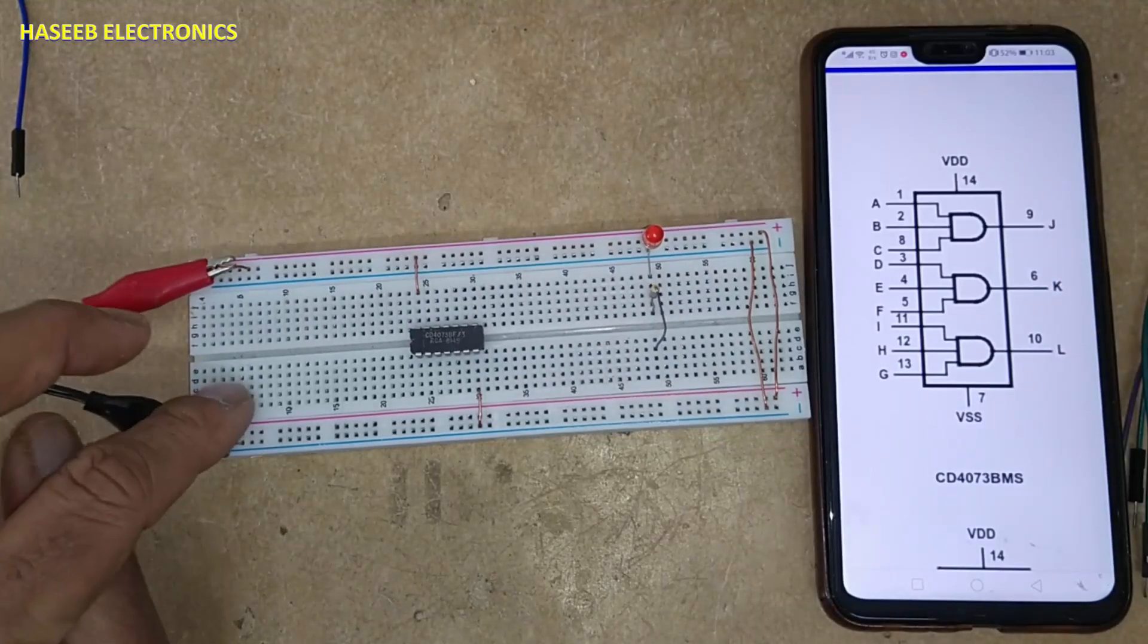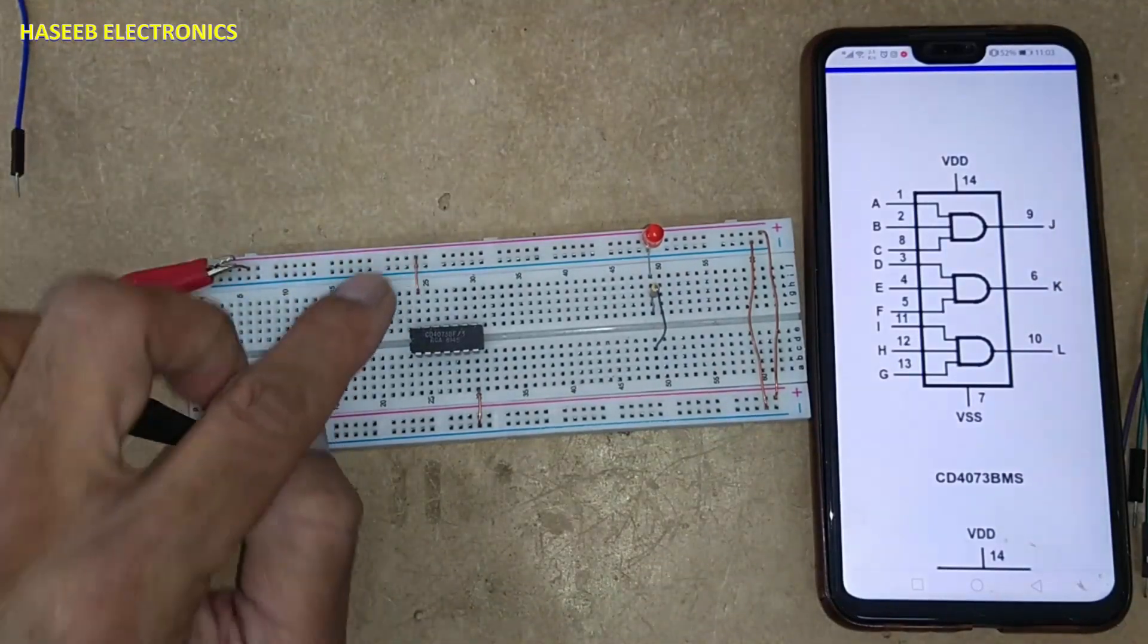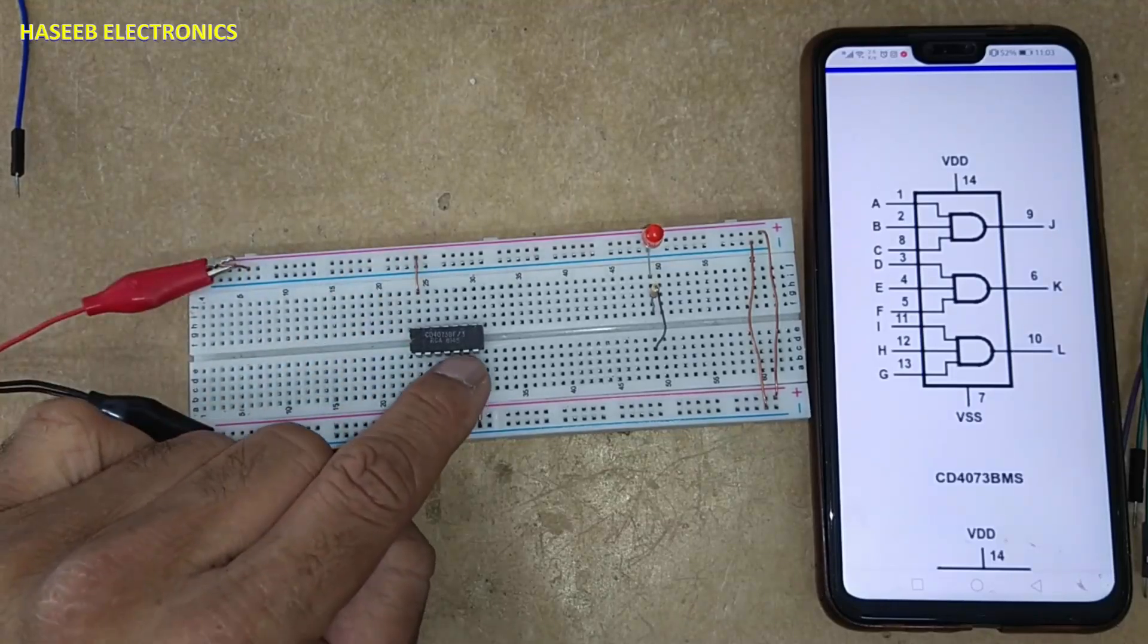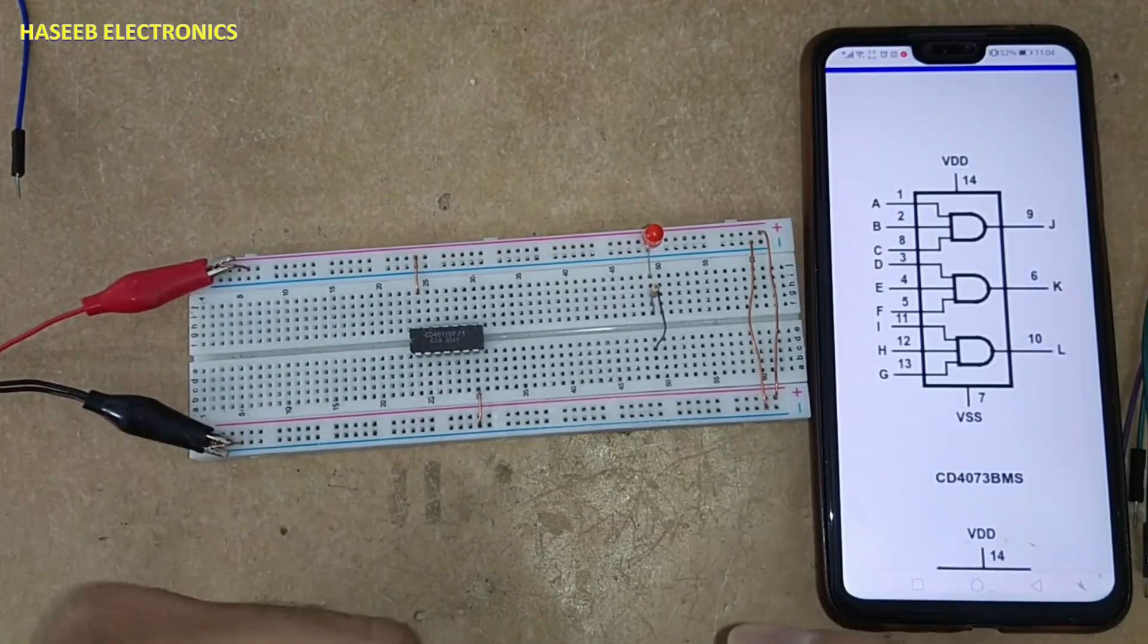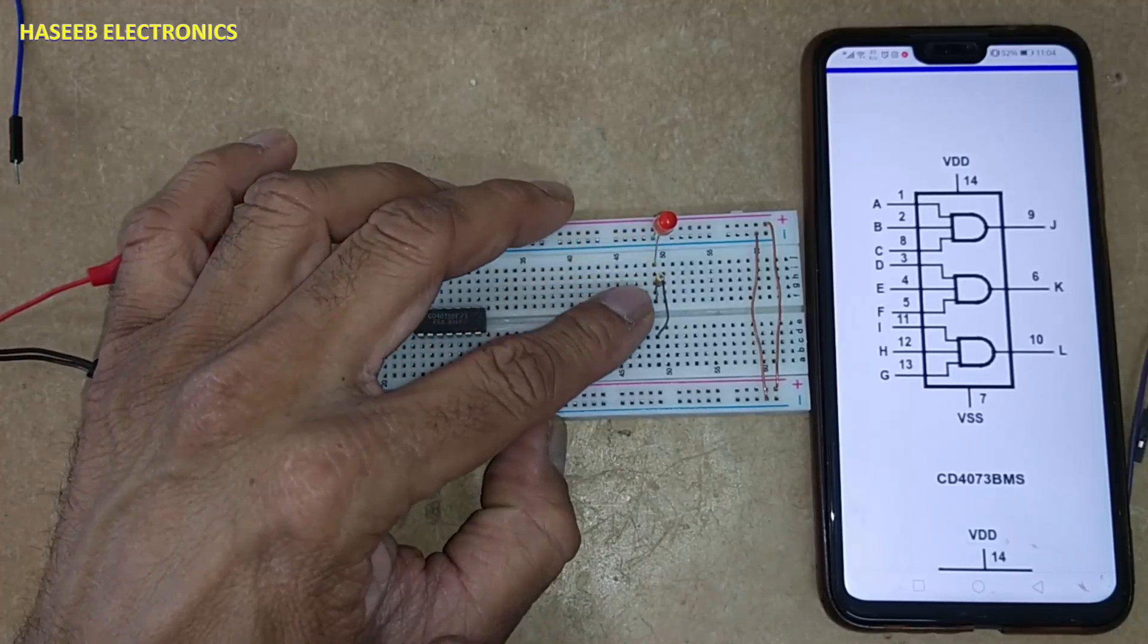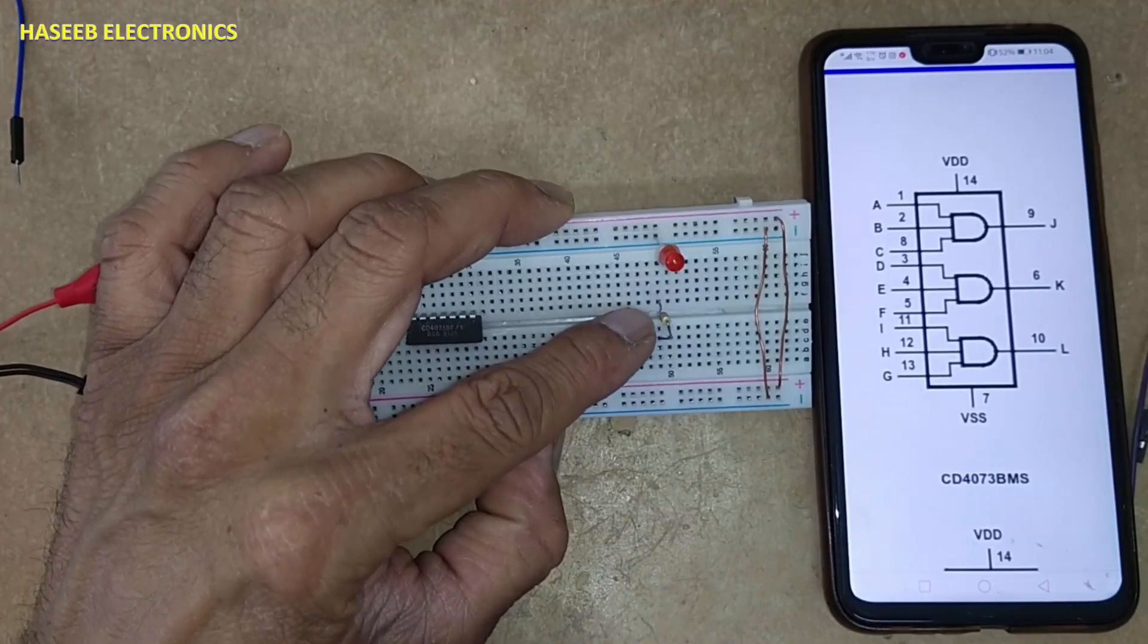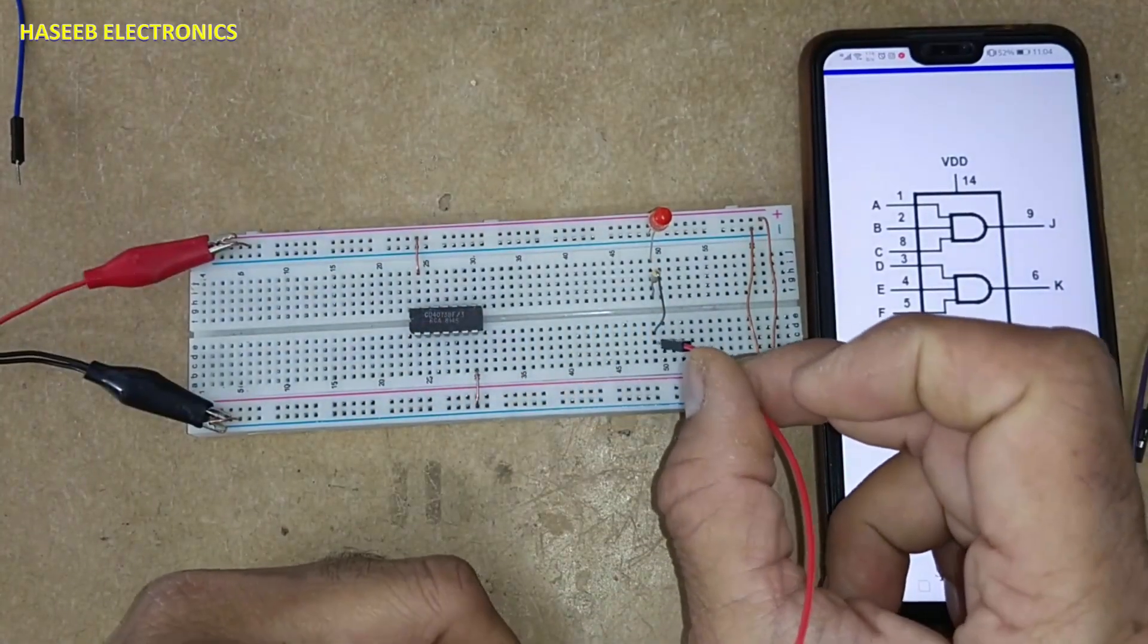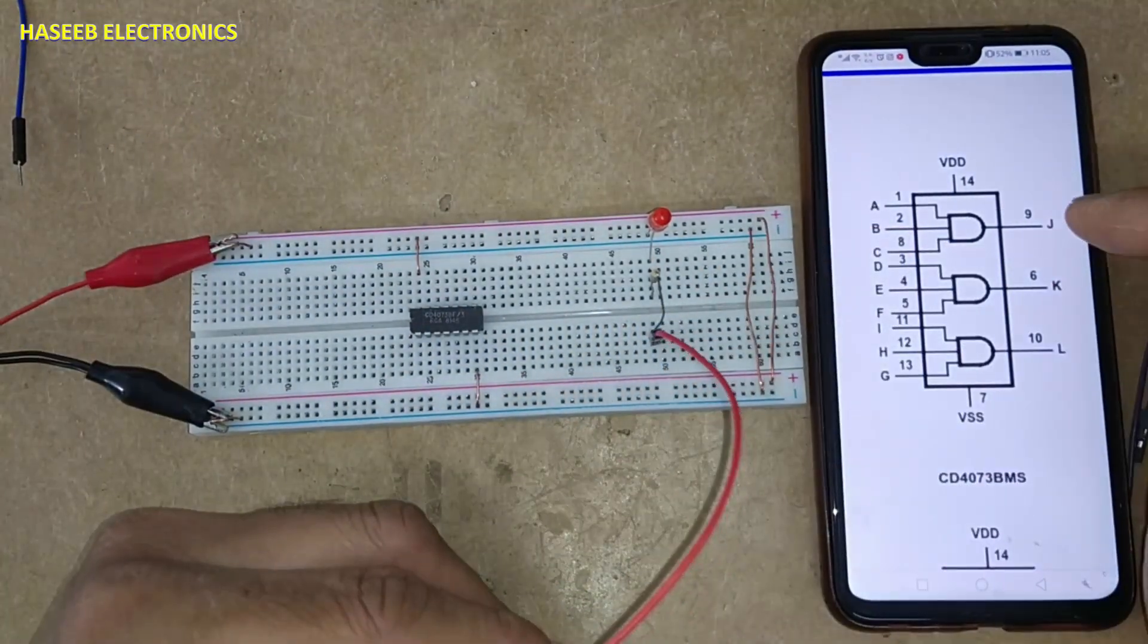I applied 5 volt with pin 14 positive and pin 7 ground. To monitor the output, I connected an LED with the cathode grounded and anode connected to a 330 ohm resistor.